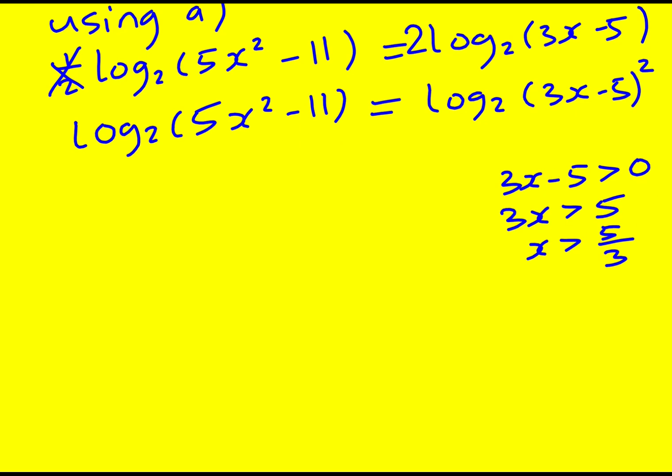Now I can just undo the logs I can basically get rid of them if they're both log to base 2. It doesn't matter it must be that 5x squared minus 11 is equal to 3x minus 5 all squared